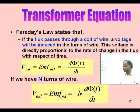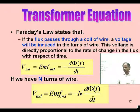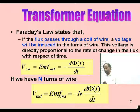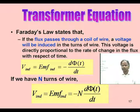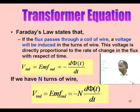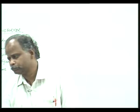According to Faraday's laws of electromagnetic induction, the induced EMF is given by minus d phi by dt. If we have N number of turns of wire — in the case of a single conductor the induced EMF is minus d phi by dt — but if we have N turns, the induced EMF is N into d phi by dt. So this is the value of induced EMF in a conductor having N number of turns.